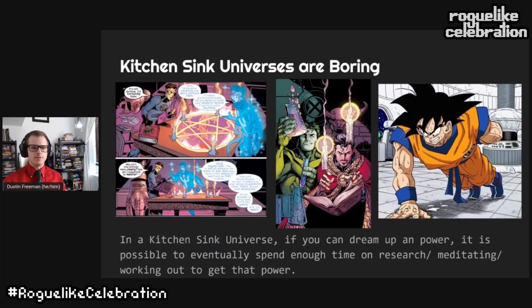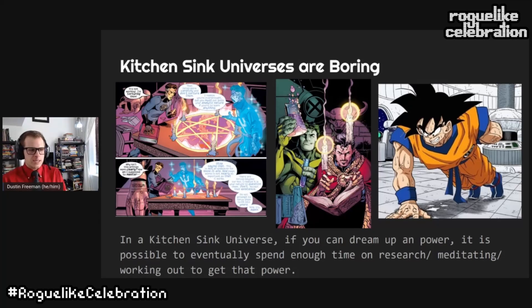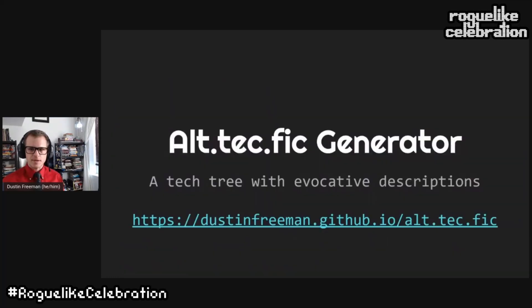Kitchen sink universes are boring — a kitchen sink universe is one where everything is possible. If you can dream of a power it is possible to eventually spend enough time on research or meditating or working out to get that power. Comic book universes are particularly guilty of this — in the Dragon Ball Z universe Goku can probably do anything as long as he works out enough, so there are no interesting choices, just quantity of effort. To sum up my thoughts, I built a procedural tech tree generator where each technology gets assigned an evocative description — you can check it out at the link shown.